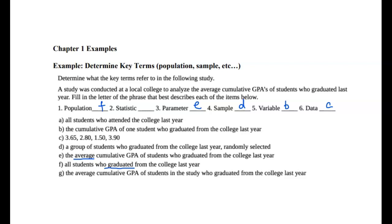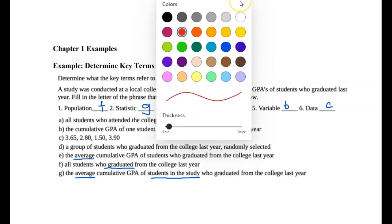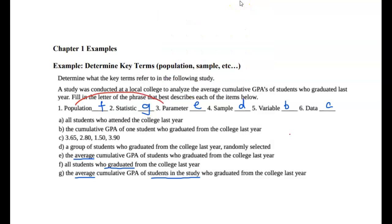Part G: the average cumulative GPA of students in the study who graduated from college last year. We're looking at the average of the data from the students in our sample — the group we selected. So this is a statistic. Statistic is a calculation from the data you collected that concerns the sample. S's go together: statistic goes with sample, just as parameter goes with population and P's go together.